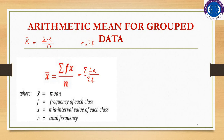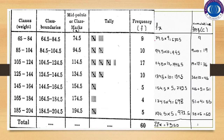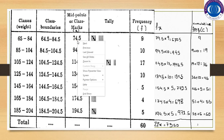Here, x̄ is the mean, f is the frequency of each class, x is the mid-interval value of the class — also called the class mark or midpoint. n is the total frequency, which equals Σf = 60, as we already counted in the previous lecture. Now we need to find the f·x column, multiplying each frequency f by the corresponding class mark x.